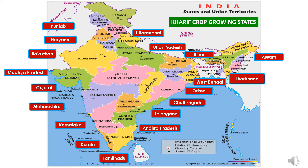Here we have shown the map of India indicating the states which are growing Kharif crops as major crops. The states which have major Kharif season are Uttaranchal, Uttar Pradesh, Bihar, Assam, Jharkhand, West Bengal, Odisha, Chhattisgarh, Telangana, Andhra Pradesh, Tamil Nadu, Kerala, Karnataka, Maharashtra, Gujarat, Madhya Pradesh, Rajasthan, Haryana, and Punjab.